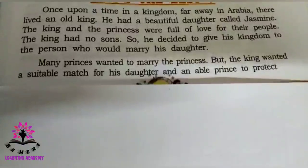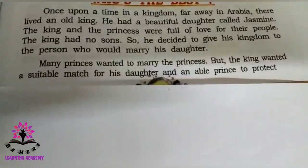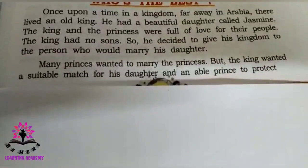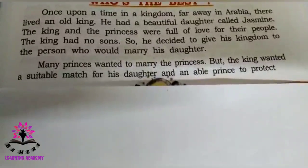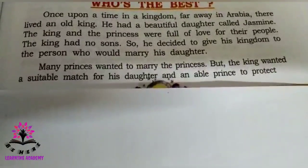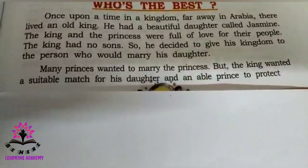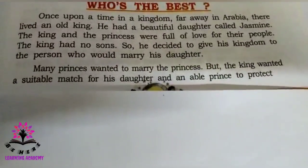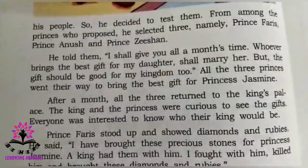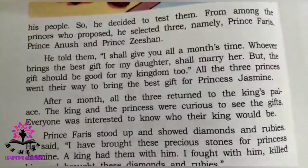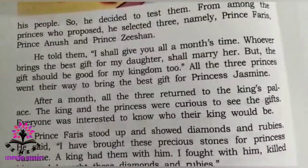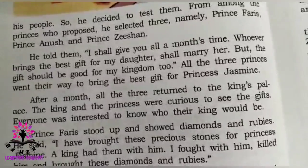Many princes wanted to marry the princess — that is, the daughter of the king. But the king wanted a suitable match for his daughter, meaning he wanted a proper prince to marry the princess. So he decided to test them. From among the princes who proposed, he selected three: Prince Paris, Prince Anush, and Prince Jishan.